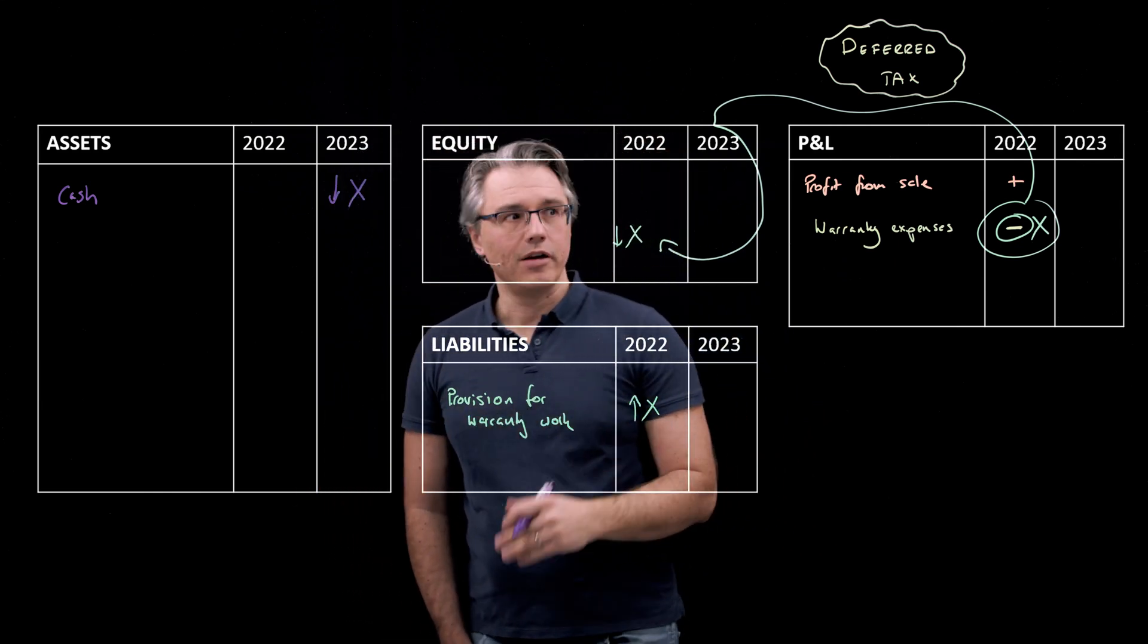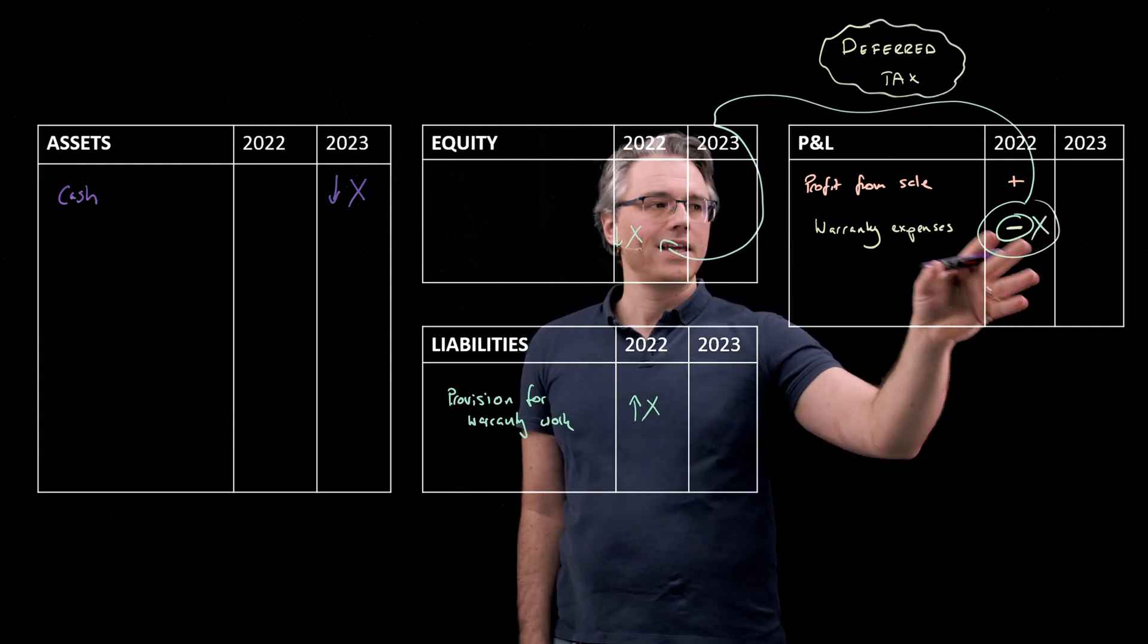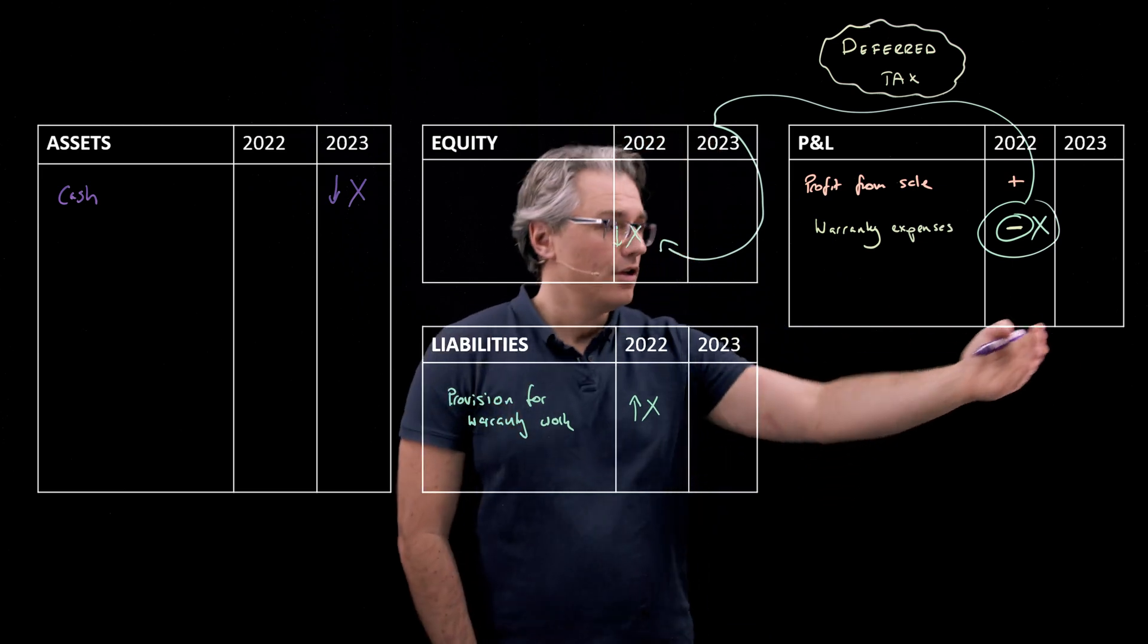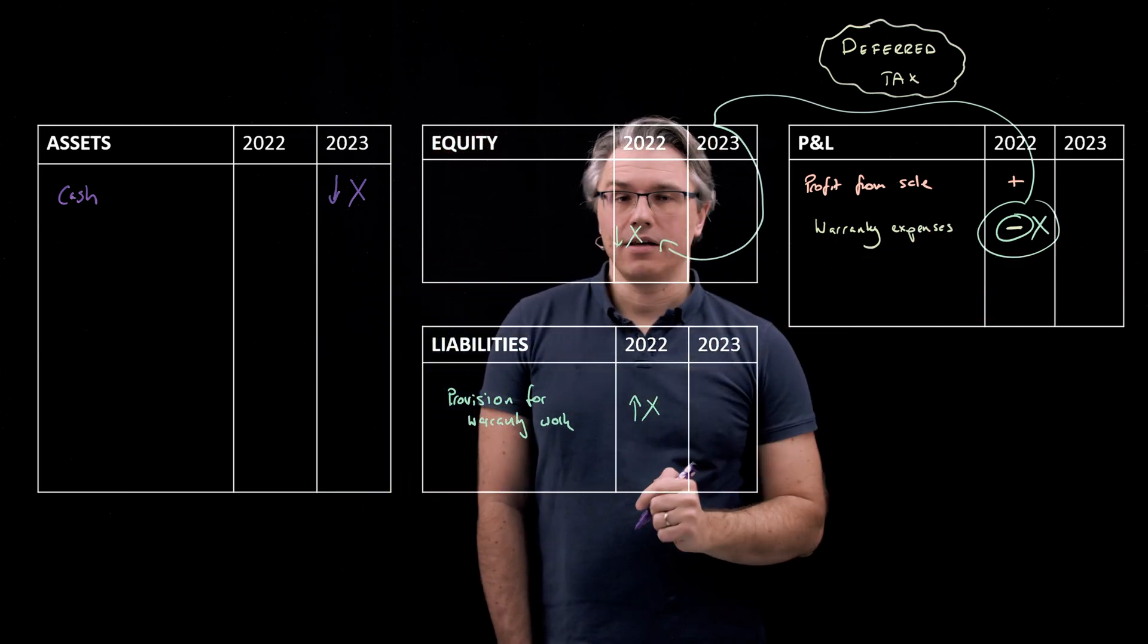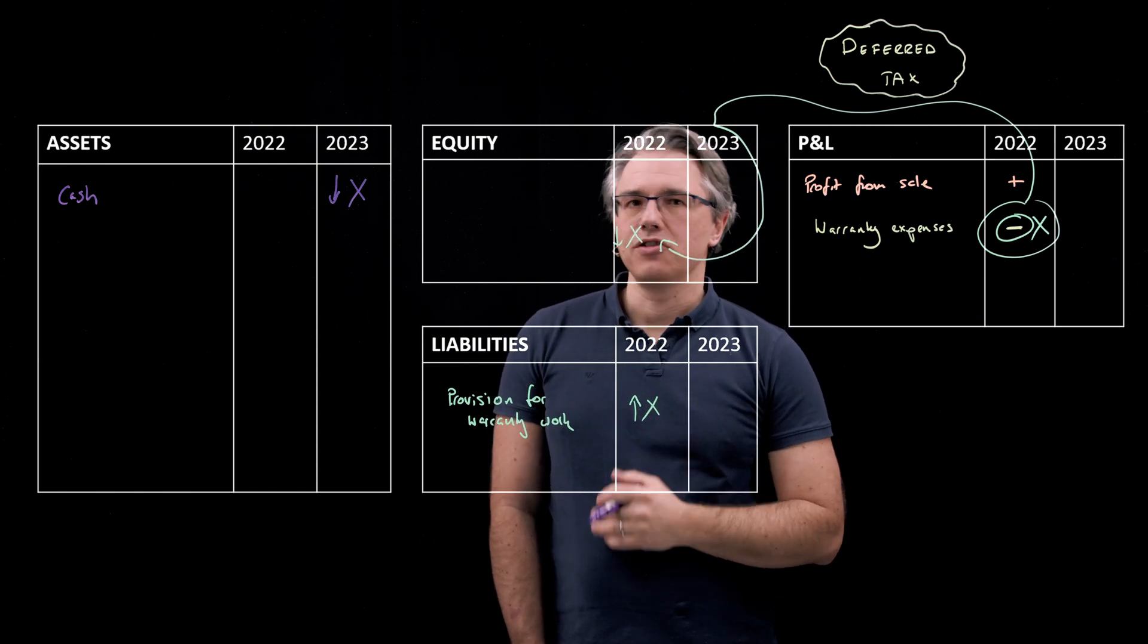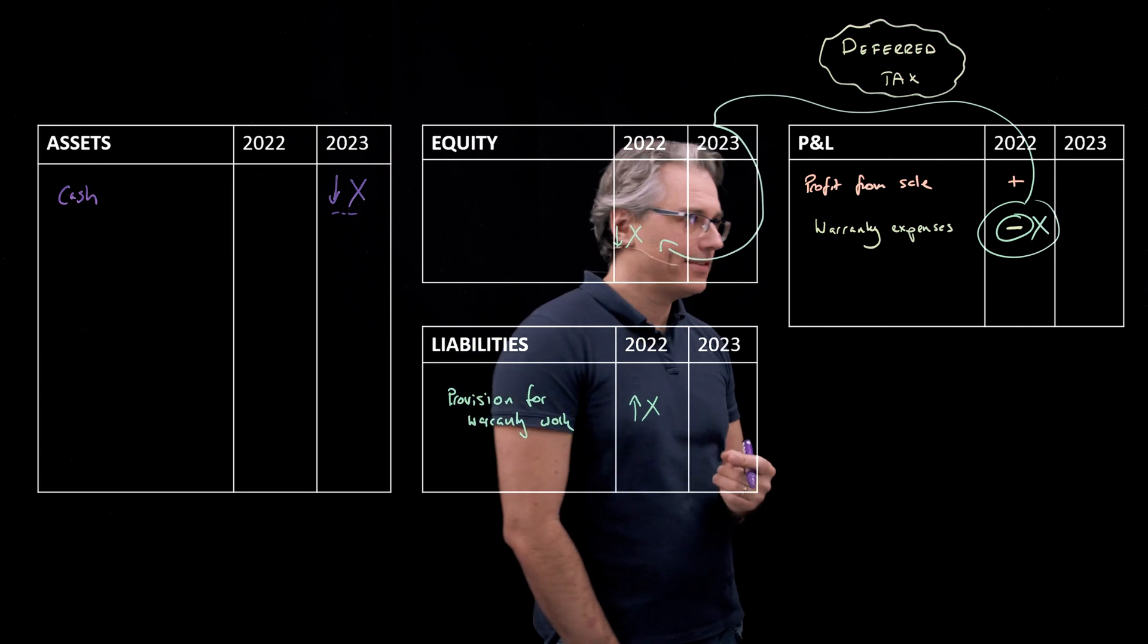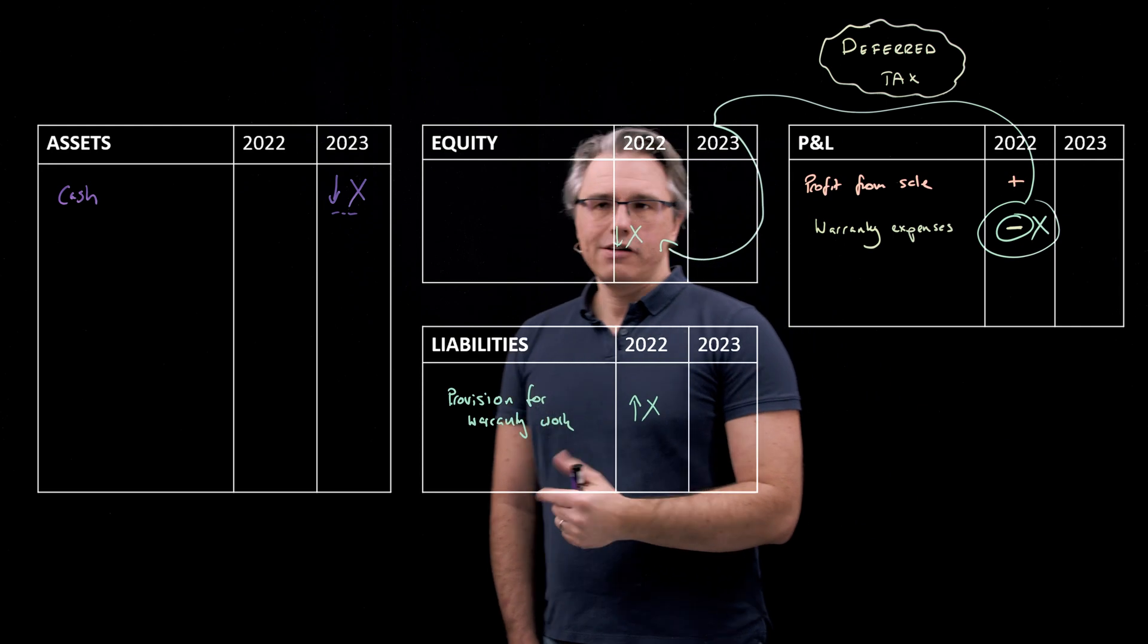And at that point in time, you no longer hit the P&L, because you've already hit it with the amount X. In 2022, you kind of accelerated the recognition of that expense. That's the whole point of creating provisions. Now, I'm assuming that the cost of the work is the amount X, which was also the amount we provided for, we created a provision for.